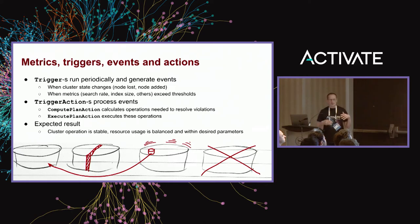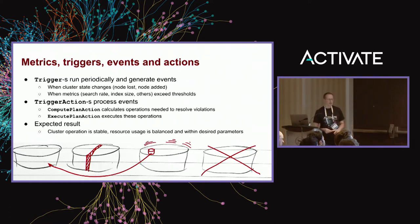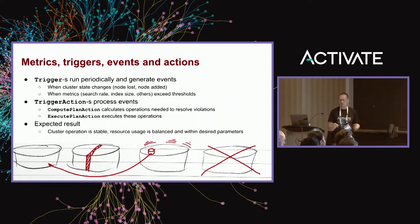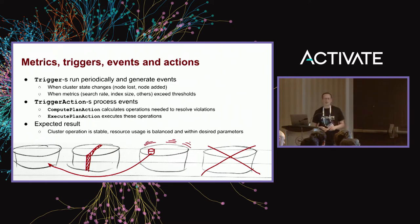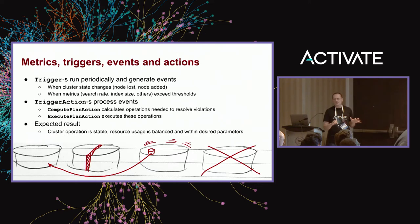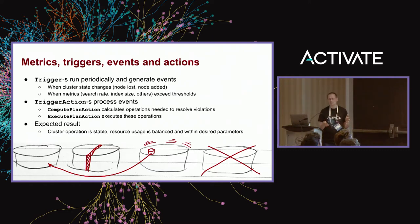When an event occurs, the trigger generates it and it is processed by trigger actions. The most commonly used trigger actions are the compute plan action, which computes the collection-level commands that need to be done — for example, move replica from node A to node B because that node is overloaded, or split a shard because it's too large. The other commonly used action is execute plan action, which actually executes these commands. The expected result is that your cluster is stable, well-balanced, resources are properly allocated, and everything runs within the desired parameters.